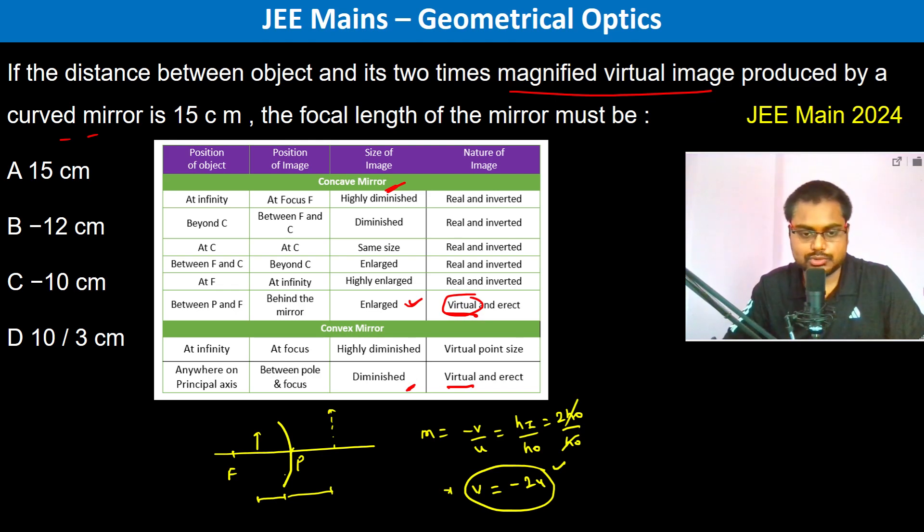Since V is equal to minus 2U, we should be very clear that U is negative in this case and V is positive in this case. That's why there is a sign difference. So if this is x, this is going to be 2x.